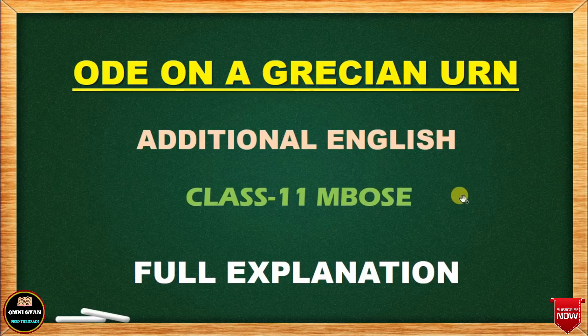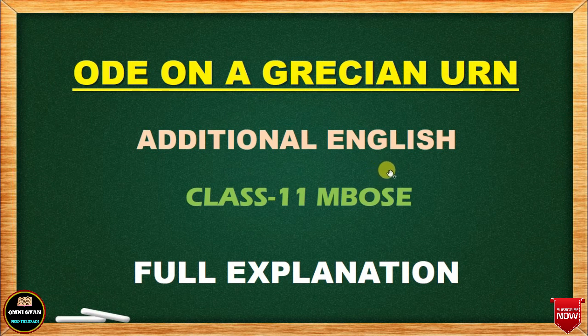Hello students, welcome to my channel Omni Gaan. Today I'm back with another explanation for Class 11. This is a very beautiful poem composed by John Keats and the poem is called Ode on a Grecian Urn. I'm going to explain it to you line by line, and I hope the explanation will help you a lot in your questions, answers, and understanding of the poem.